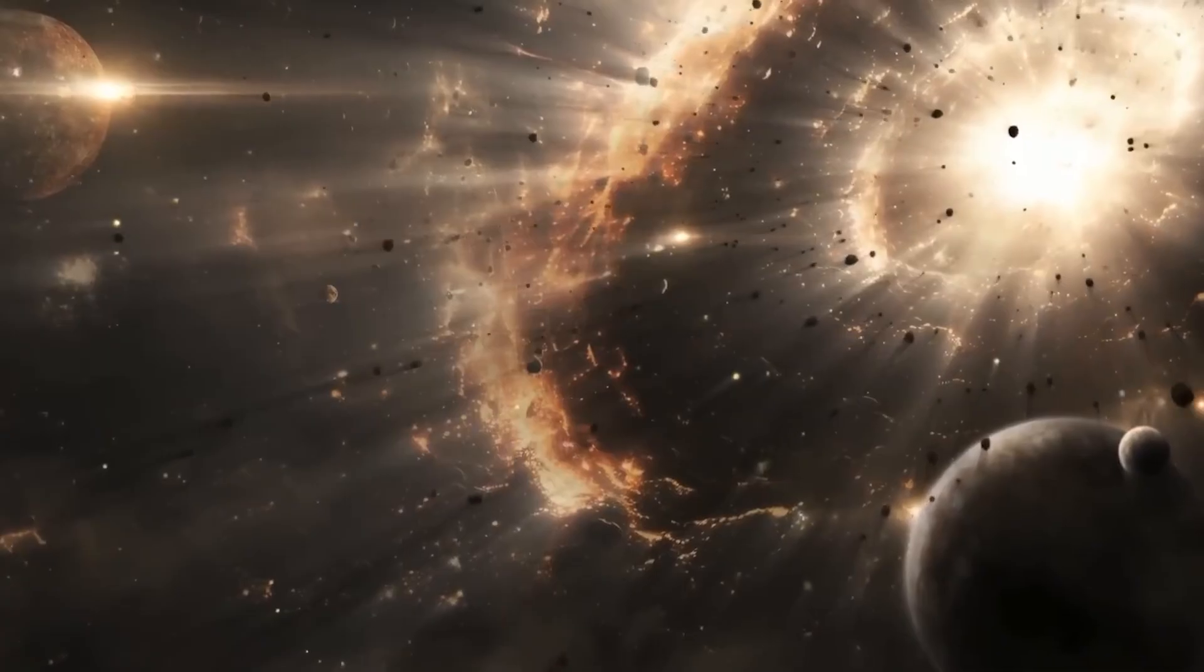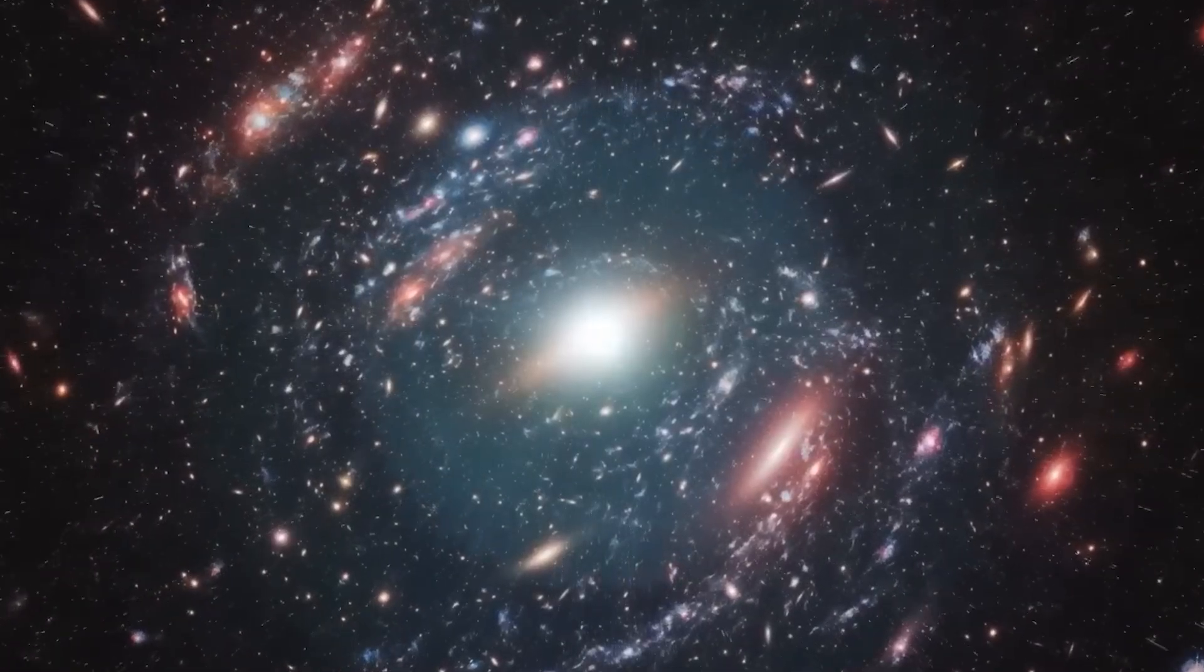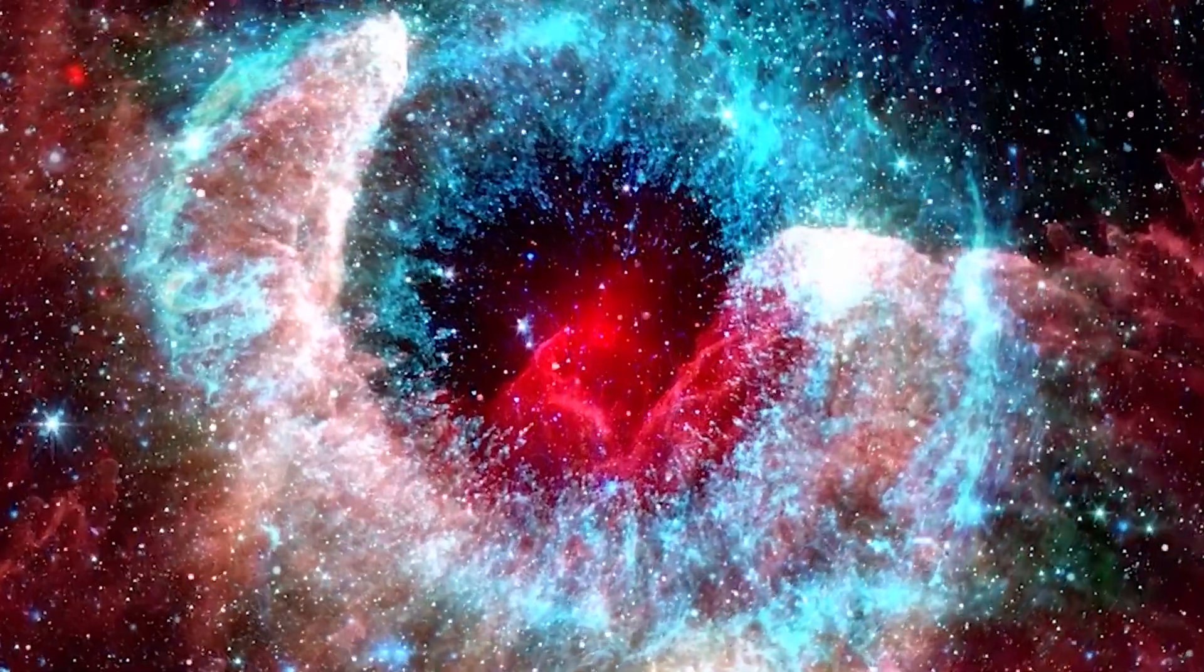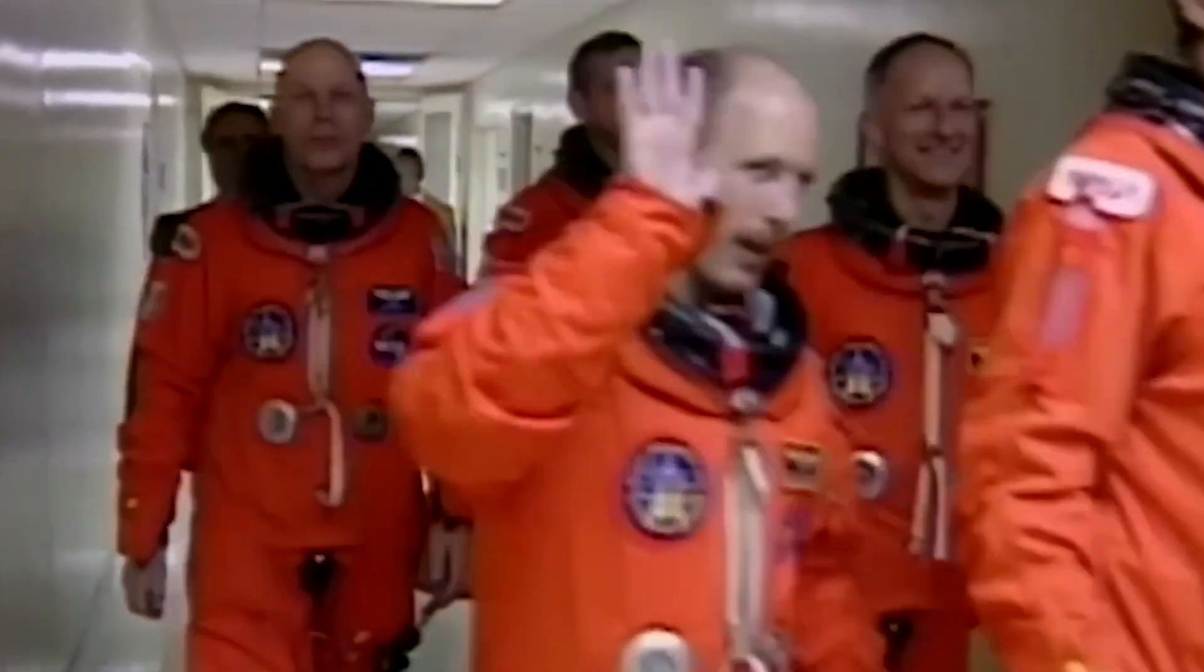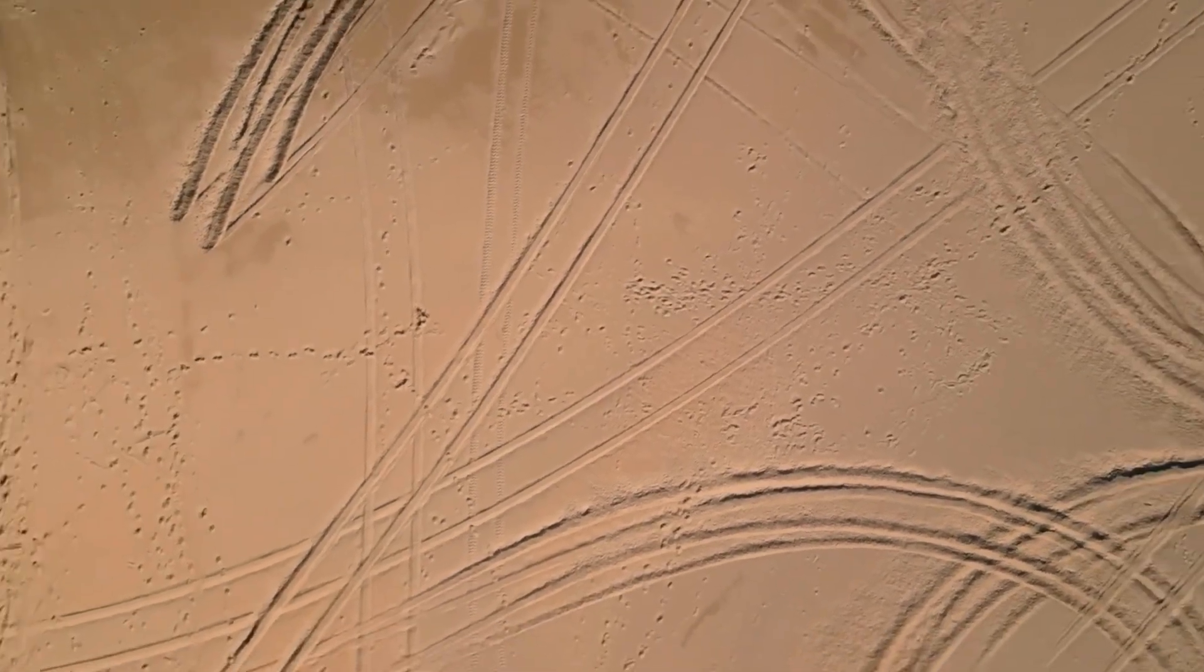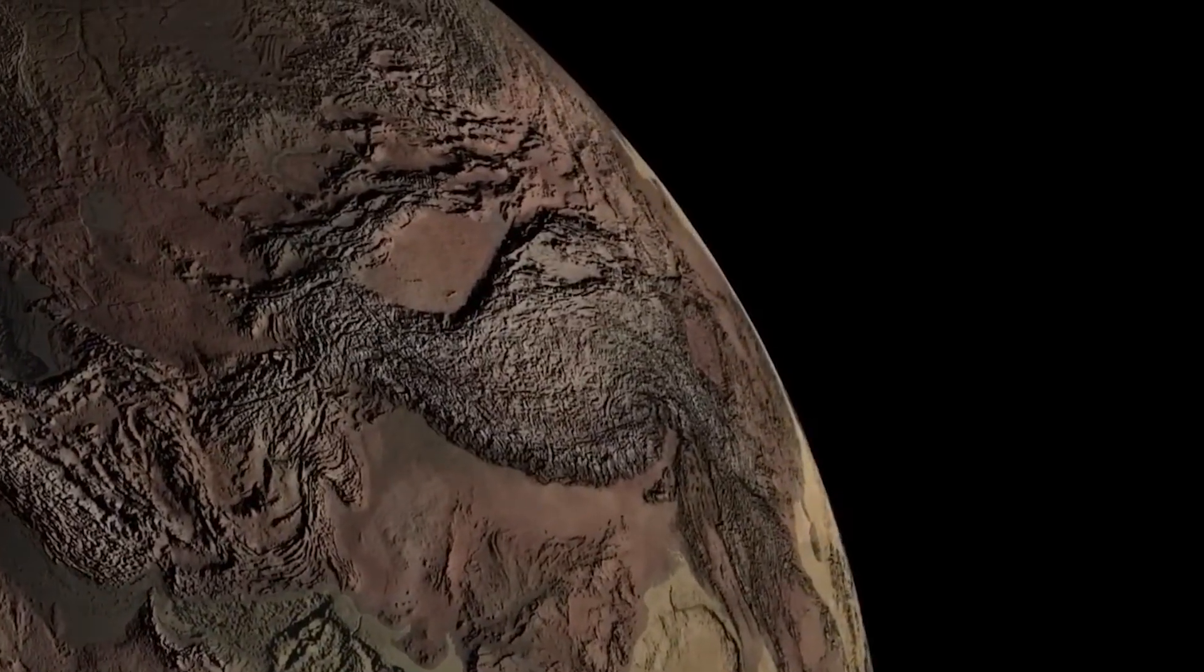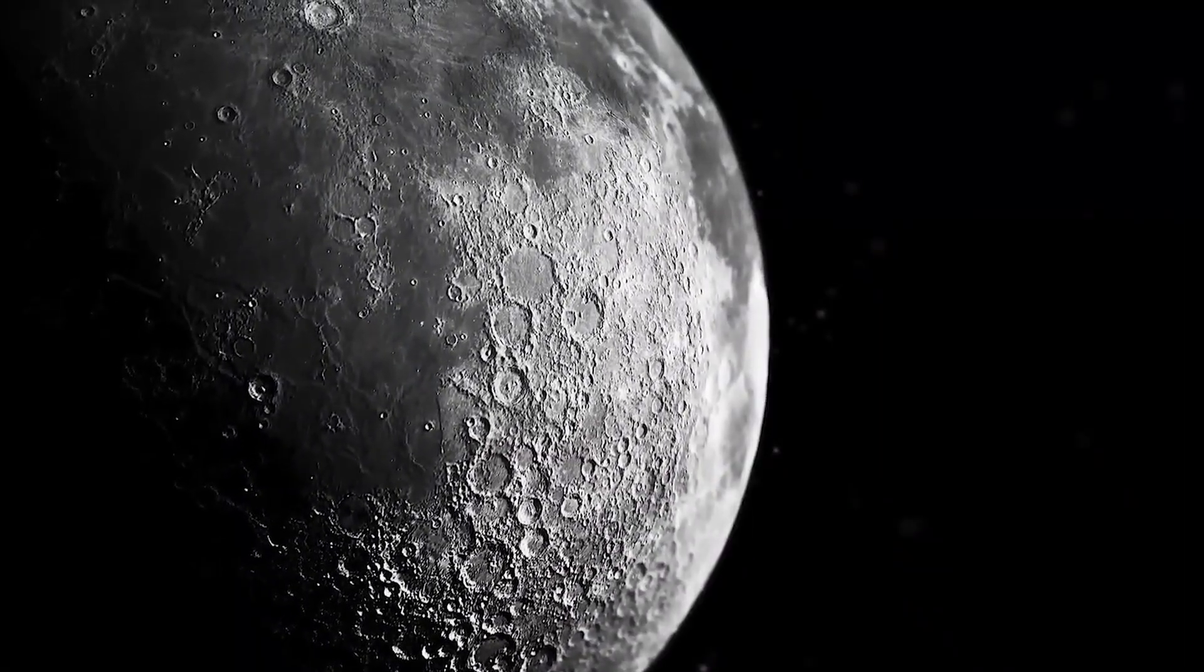Among Jupiter's many moons, Europa stands out as one of the most tantalizing targets in the search for extraterrestrial life. This icy moon is believed to hide a vast salty ocean beneath its frozen crust, kept liquid by the intense tidal forces exerted by Jupiter's gravity. While spacecraft such as Galileo and Voyager provided excellent images of Europa's surface, Hubble contributed something unique. Its ultraviolet capabilities allowed it to detect what appeared to be water vapor plumes erupting from the surface, hinting strongly at an active subsurface ocean.